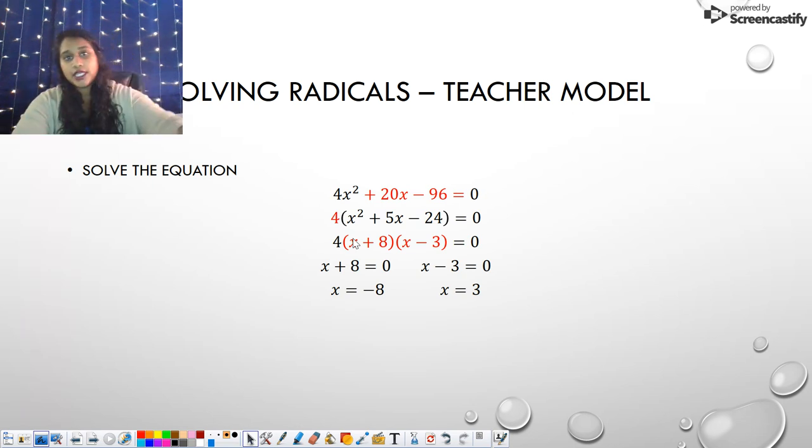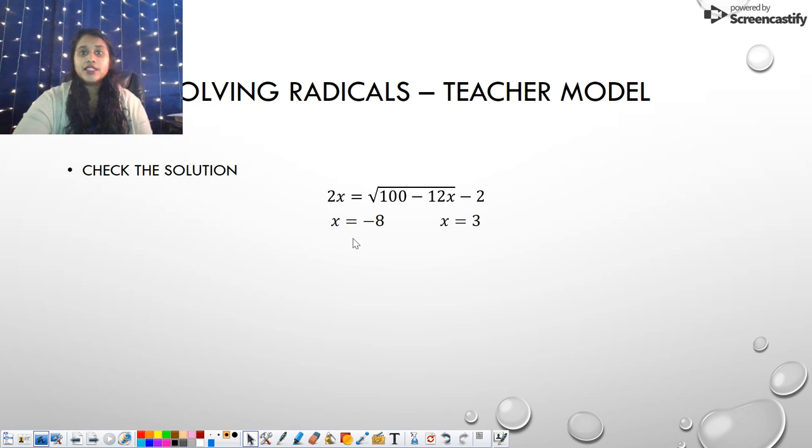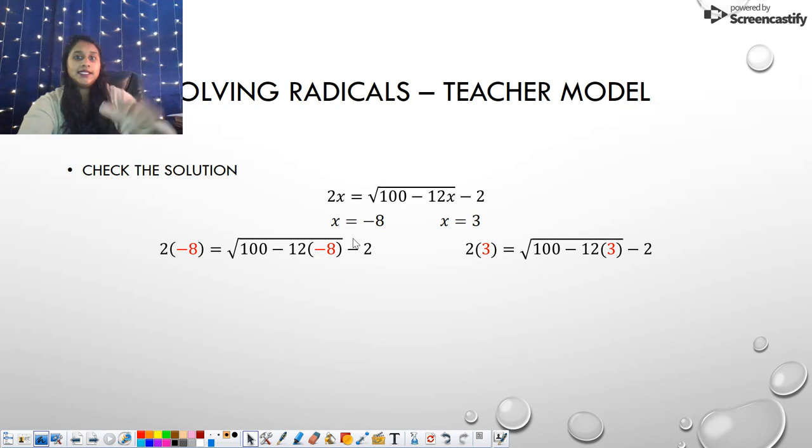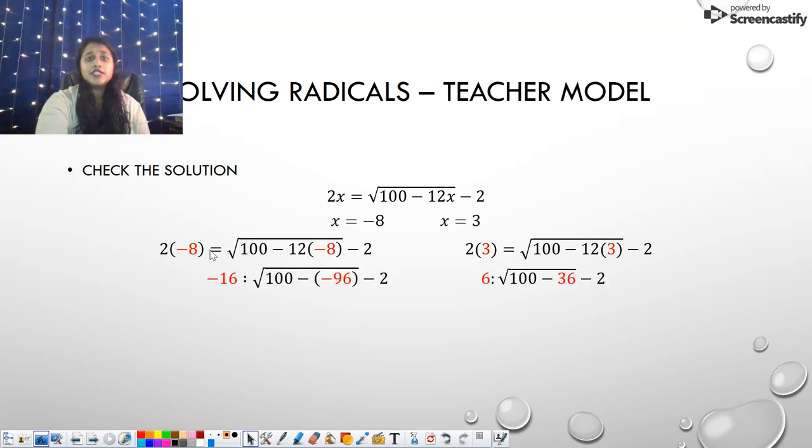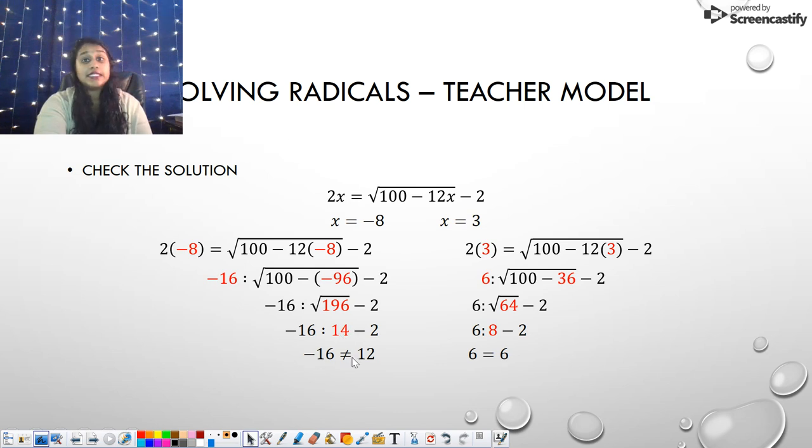Here's the most important part. We're going to take those values and plug it back into the original equation. So here's my original equation. Here are those values. I'm going to take them and plug them in. I did them simultaneously on both sides so you can follow along. And I keep on going. And I dropped the equal sign because at this point I'm checking, are they equal? So I continue on, and now I get down to the fact that negative 16 does not equal 12, but 6 does equal 6. So that tells me one of these is the extraneous solution. Probably this one over here since it didn't work. And that's the correct answer. The only answer to this was x equals 3.